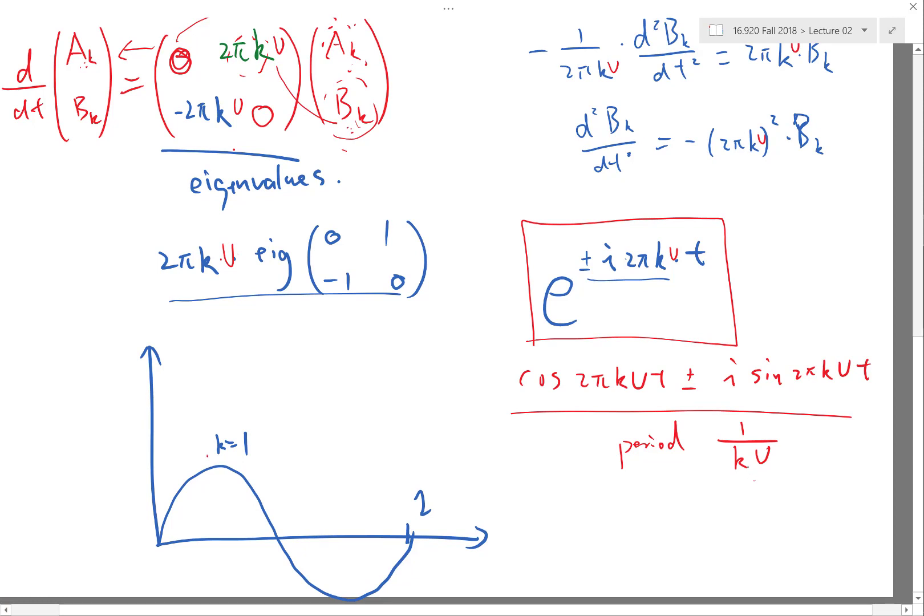It takes 1 over u for this function to recover itself. What happens is that this function is going to advect towards the right at a speed of u. So when t is equal to 1 over u, we have completed one period through space and we have shifted back to its original location.